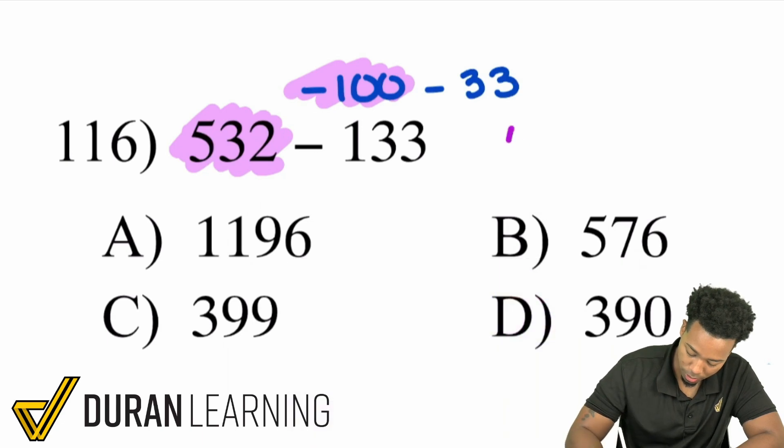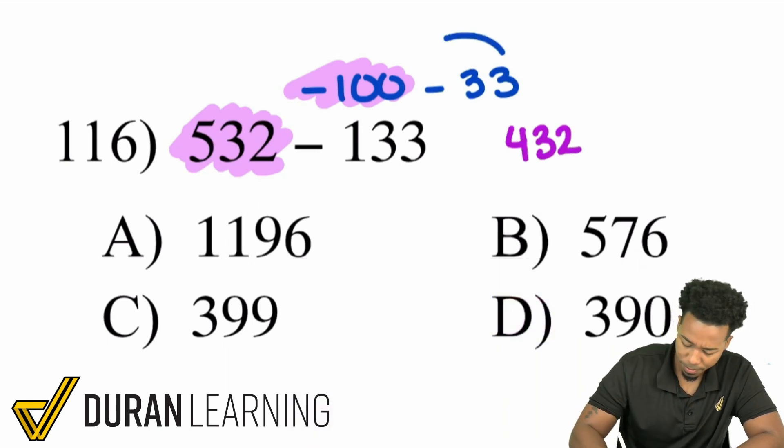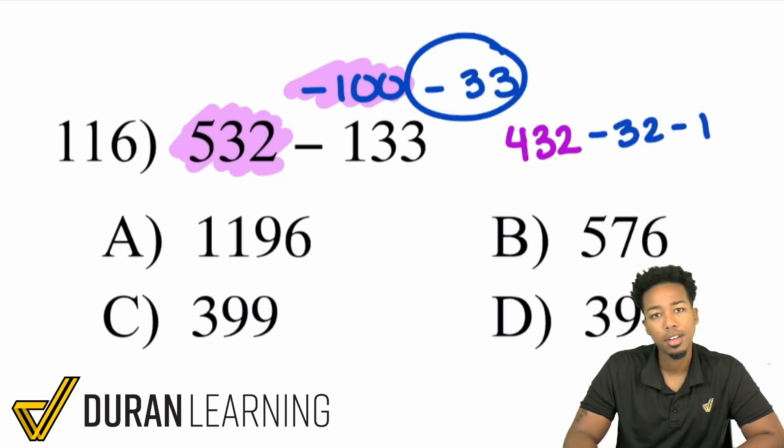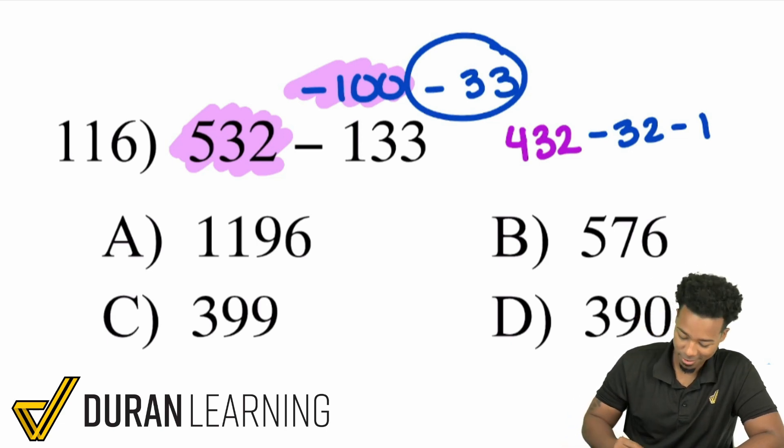that'll end up being 432 in my head and if I'm taking away 33 well that's the same thing as taking away 32 and taking away 1. If I take away 32 that's 400. Take away 1 that's 399 right there.